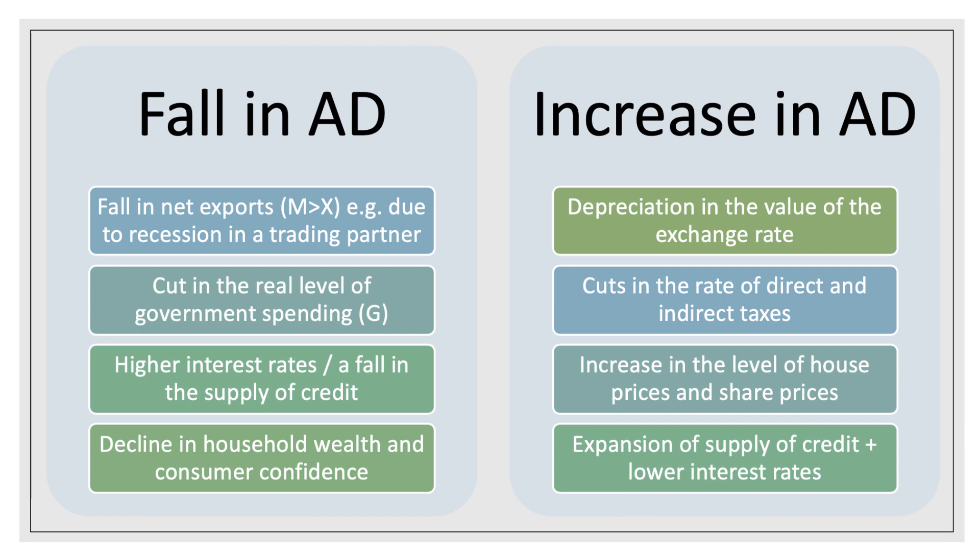On the other hand, an increase in aggregate demand could be due to a fall in the value of the exchange rate, which makes a country's exports more price competitive overseas. Perhaps it's the result of a fiscal stimulus from cuts in the rate of direct and indirect tax, such as income tax and VAT. Possibly an increase in AD could be the consequence of a rise in house prices, a rise in property wealth and share valuations. Or the financial system expands the supply of credit and money becomes more easily and cheaper to borrow, while the rate of return on saving goes down.